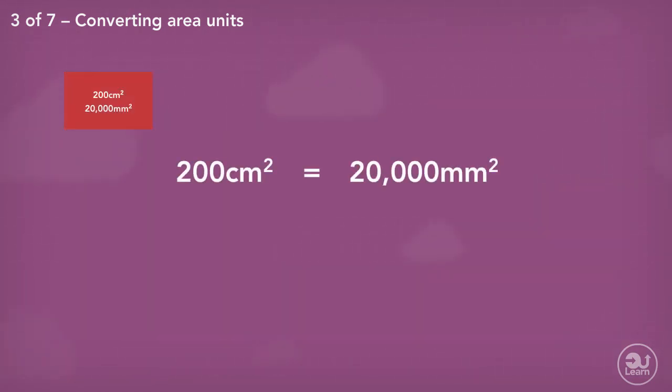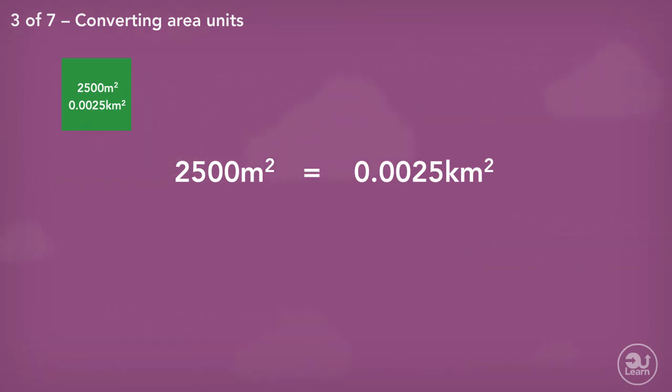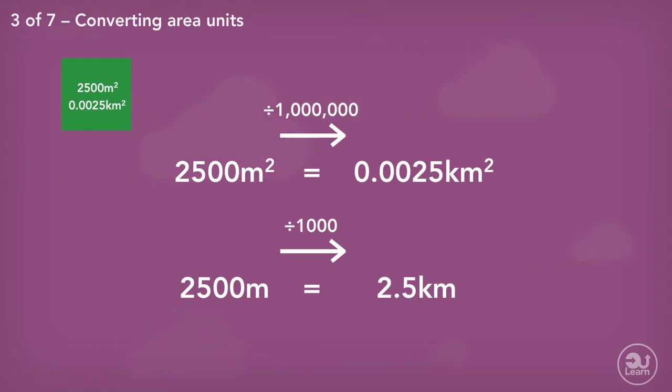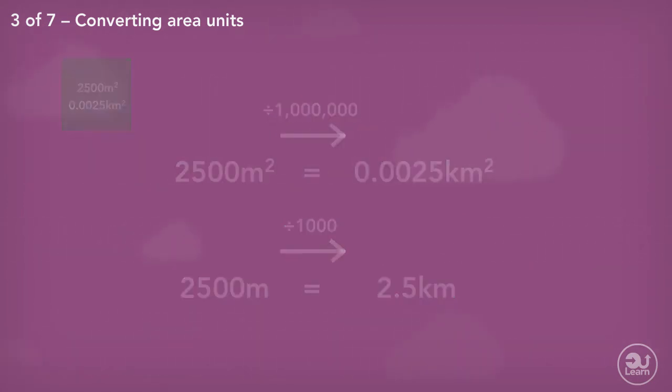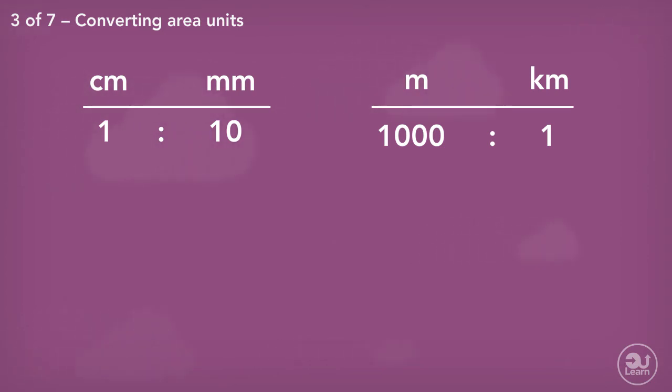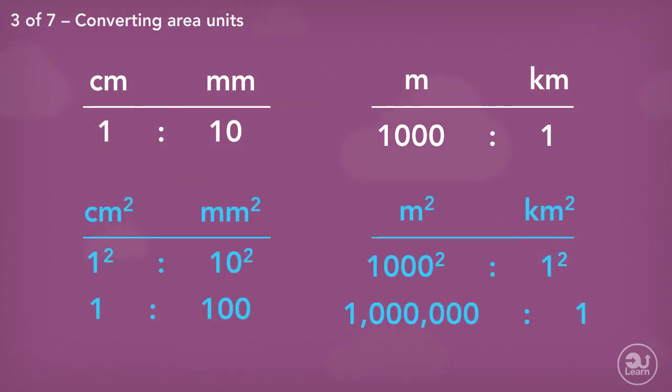200cm² is equivalent to 20,000mm². This is 100 times larger, whereas converting from centimeters to millimeters is only 10 times larger. 2,500m² is equal to 0.0025km², 1 million times smaller, whereas converting from meters to kilometers is only 1,000 times smaller. I think there's a pattern. Whatever the original conversion is, the area relationship is squared.